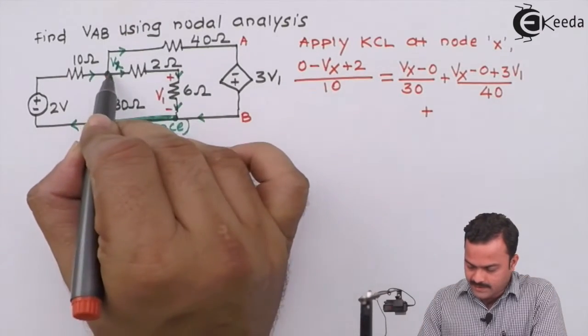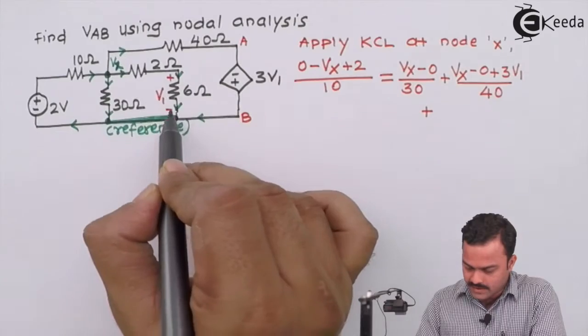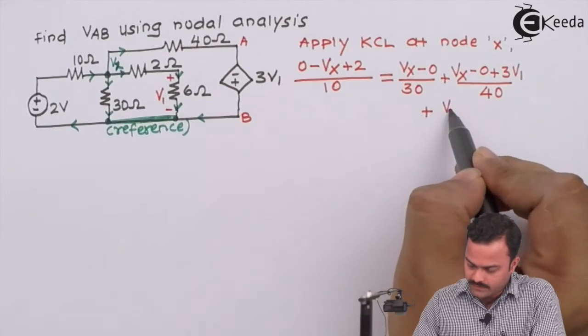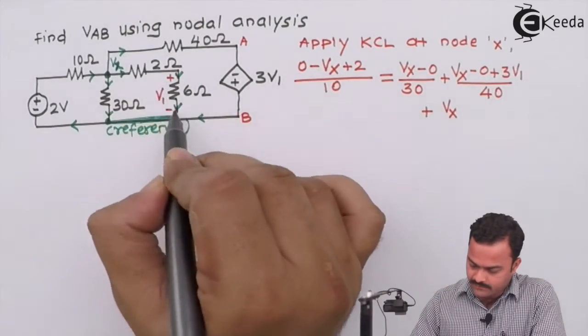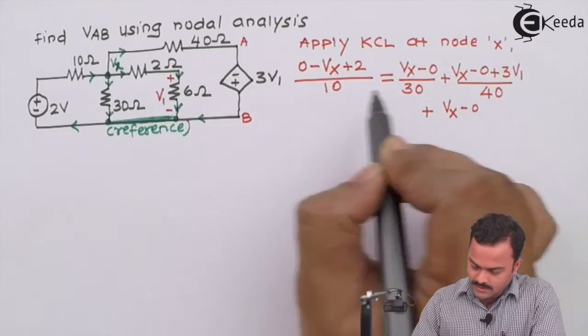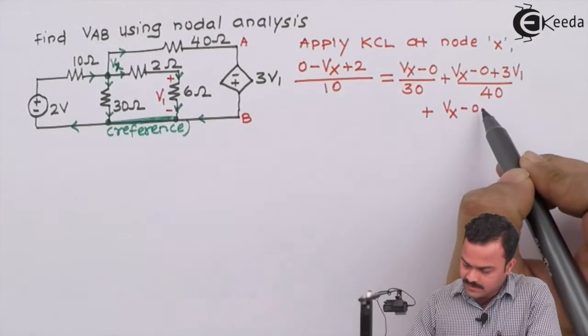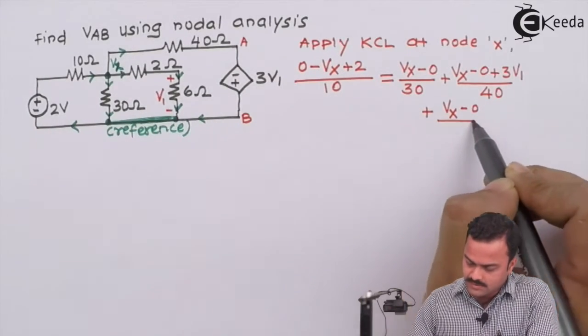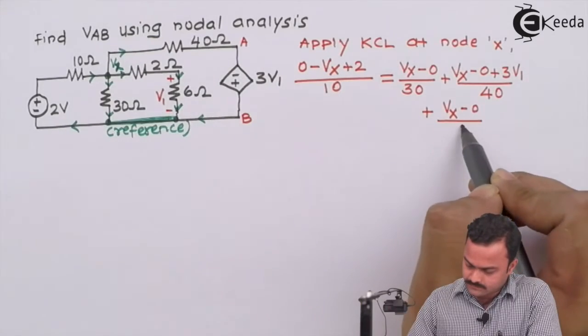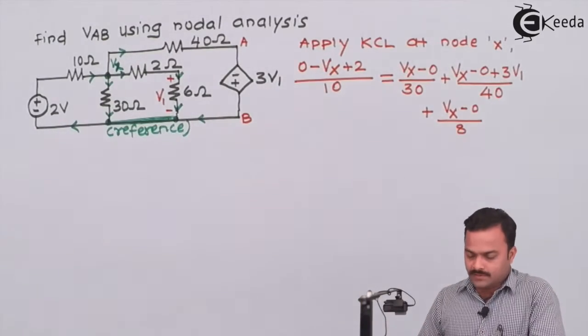And third branch is this. Now see, the entire thing is one branch, which has started from Vx and ending on reference. And the total resistance in the branch is 8. So we will get this equation.